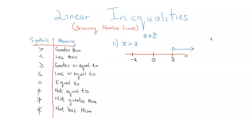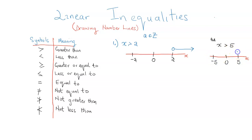Let's take a quick example. If we are to plot x greater than 5 on the number line, here we can see that a is 5. We draw a straight line representing the values of x, with 0, then 5 to the right, and negative 5 to the left. Since greater than doesn't have an equal to, it's going to be an unshaded circle, and the arrow is going to point to the right. This tells us that the solution — all values to the right of 5 — are valid. 5 is non-inclusive, so for example, 6, 7, 8, 100, 1000, and so on.